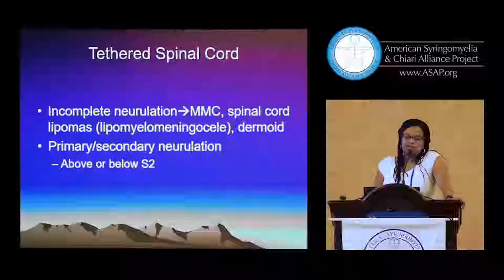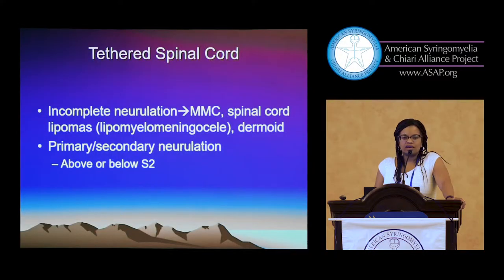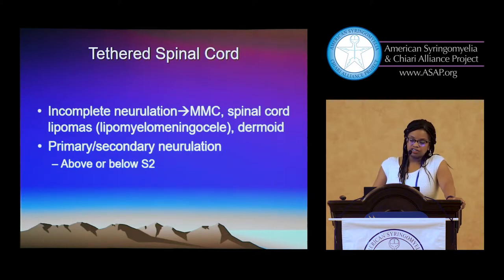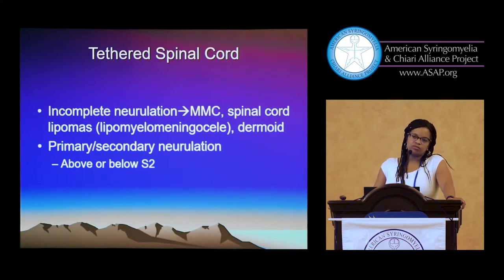This is generally a neurulation defect. It happens between about the fourth and the eleventh weeks of gestation, and that results in spina bifida earlier in gestation, and then later the spinal cord lipomas, also known as lipomyelomeningocele, the split cord malformations, dermoid and epidermoid tumors within the spinal cord.